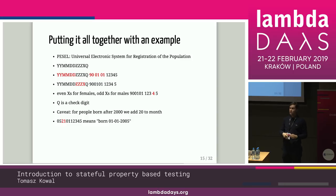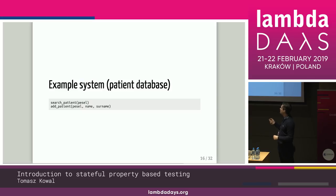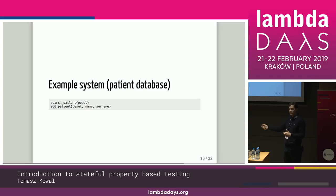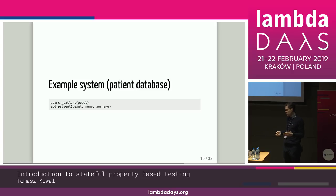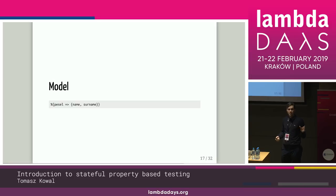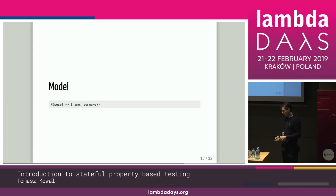That is a good thing to test with property-based testing. We will create a very simple example: a patient database with only two operations — search patient by PESEL, or add patient with PESEL, name, and surname. How can we model this? Our database can have sharding, be connected via the internet, and have a lot of complexity. But we need a simple model that captures what the database does and preferably runs in memory.